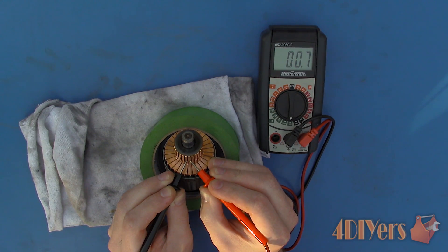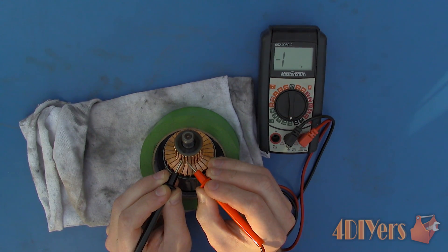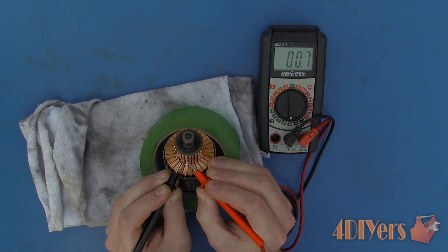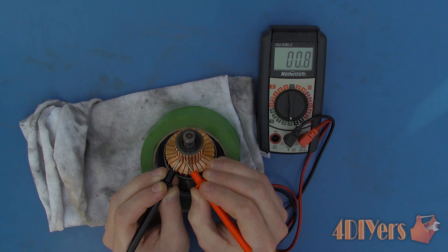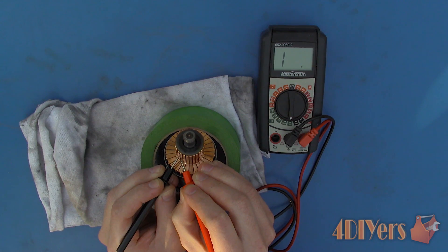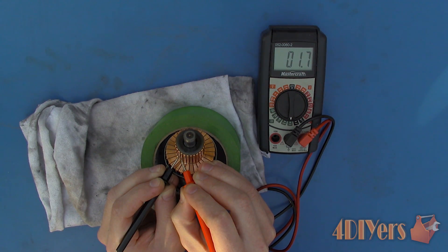Continue this for each of the bars all the way around the commutator. As mentioned earlier there will be a specific reading for this which is dependent on design of the armature. But what is most important here is there is not a large fluctuation between the values. Otherwise it will indicate a fault.